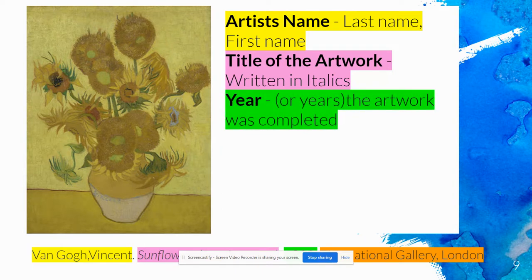The year can be a little confusing for works of art that took a very long time — like Michelangelo's Sistine Chapel, for example, which was painted over the course of four years. If that were the case for your work of art, you would include those years in your citation: the year it started, then a dash, then the year it was completed.